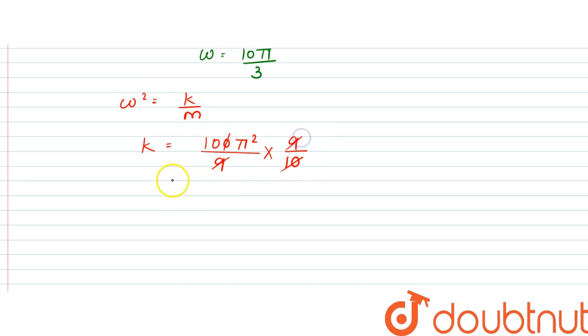So this cancels, this cancels, so it would be 10 pi square, which is approximately equal to 100 newton per meter.